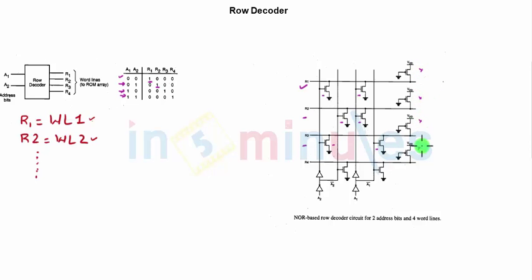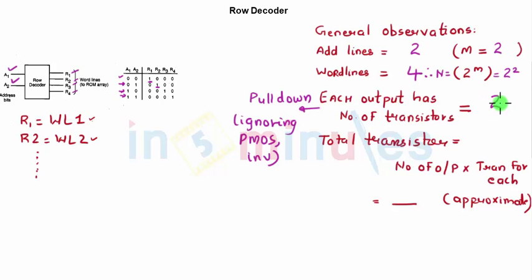Total number of transistors would be number of outputs, which is 4 in this case, times the transistor for each, which is 2, which is 8.